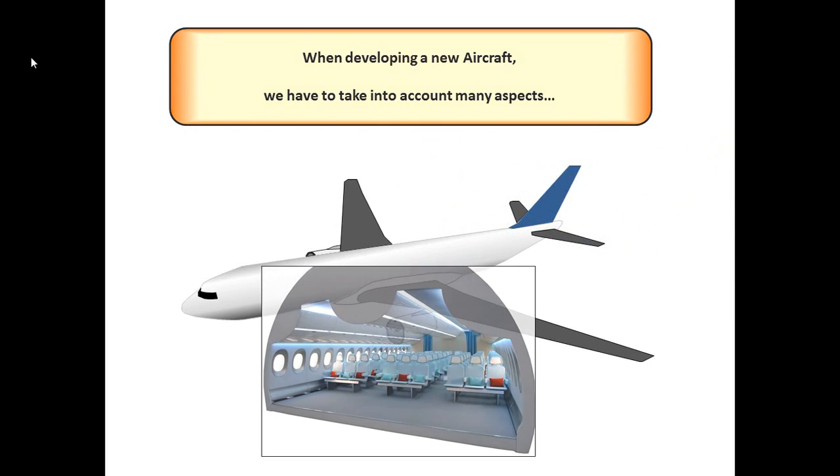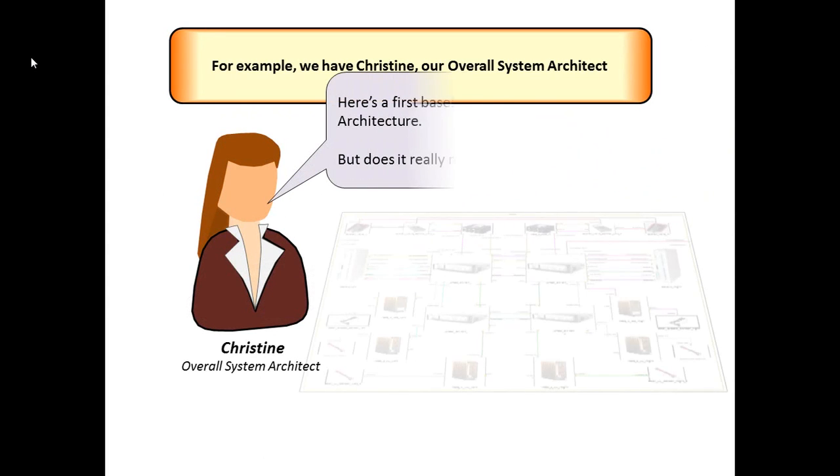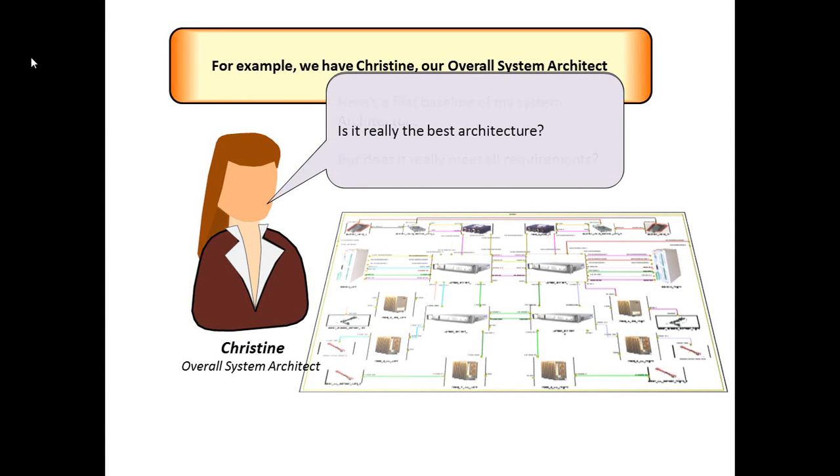For example, we have Christine, our system architect. She is responsible for the high-level architecture of the system. Christine's job is to produce a baseline architecture which will serve as a reference to the other teams. She will be looking to verify that this model satisfies project requirements and also how the model performs against different criteria.